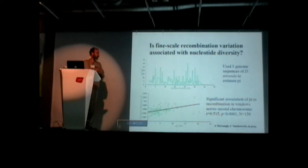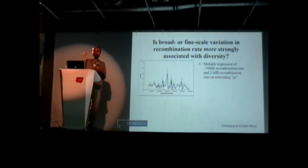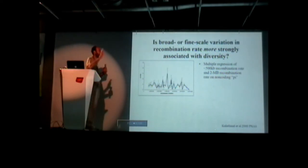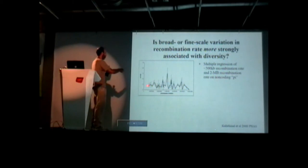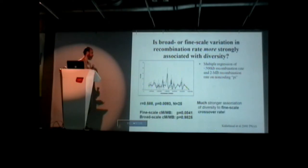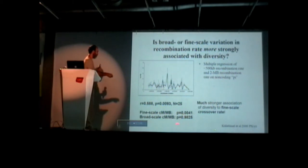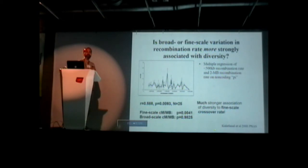Also in D. pseudoobscura — again, a positive association of variation to recombination. So the secondary question: is broad-scale or fine-scale recombination variation more strongly associated with DNA sequence diversity? We did a multiple regression of fine-scale recombination and broad-scale recombination to see which better predicts sequence diversity. What we found is that fine-scale recombination has a very strong association, while broad-scale recombination has an almost non-existent or slightly negative association.